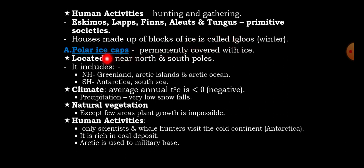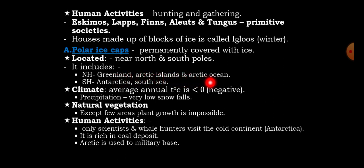The second region is called the polar ice cap. This region is nearest to the North Pole and South Pole. The polar ice cap is permanently covered with ice. This region is located near the north and south poles. It includes the northern hemisphere and southern hemisphere. The northern hemisphere includes Greenland, Arctic islands, and the Arctic Ocean.